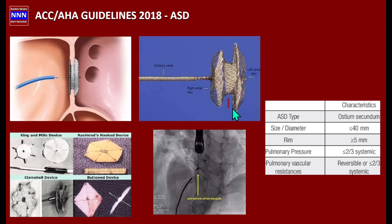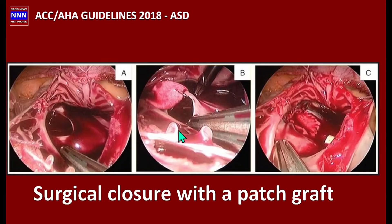The criteria for device closure are: ostium secundum defect, size less than 40 millimeters, at least a 5 mm rim on the edges, pulmonary artery pressure less than two-thirds of systemic pressure, and pulmonary vascular resistance less than two-thirds of systemic vascular resistance. If these criteria are met, device treatment may be an option.